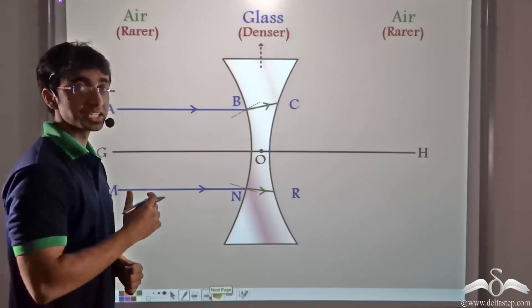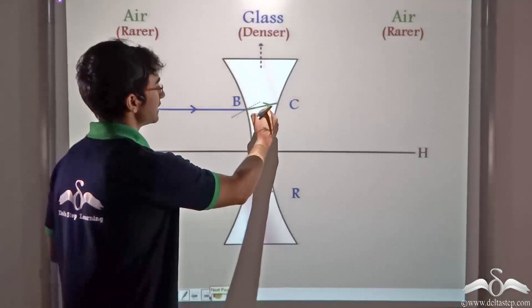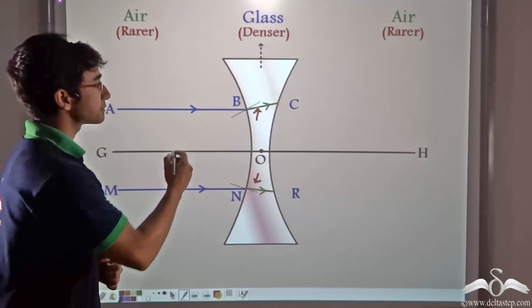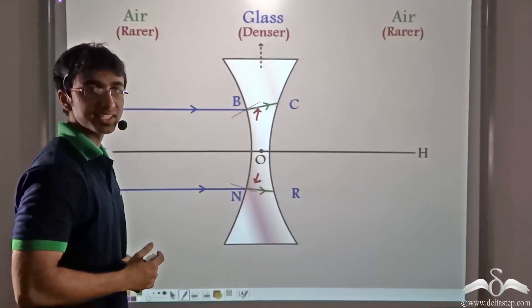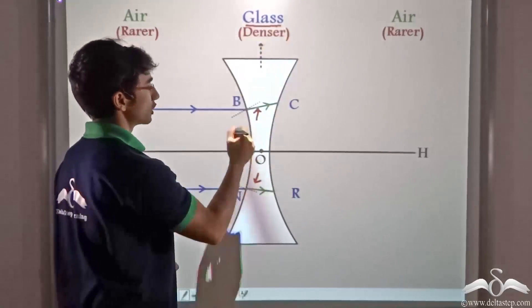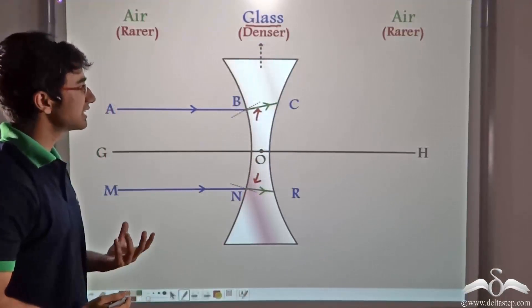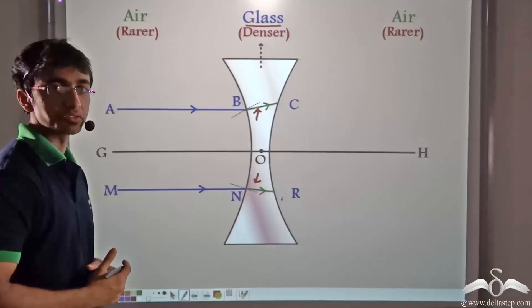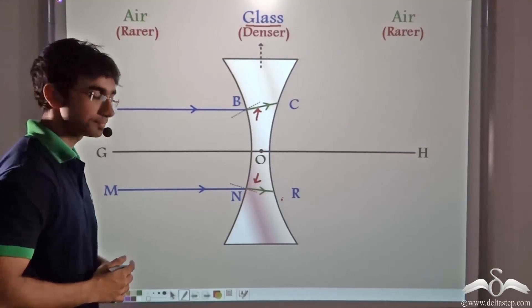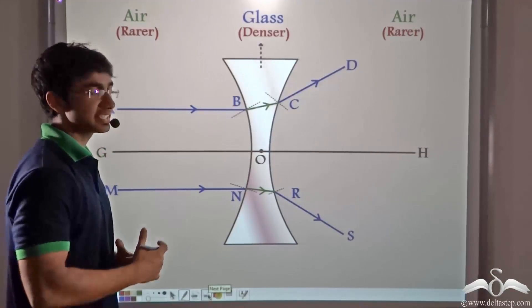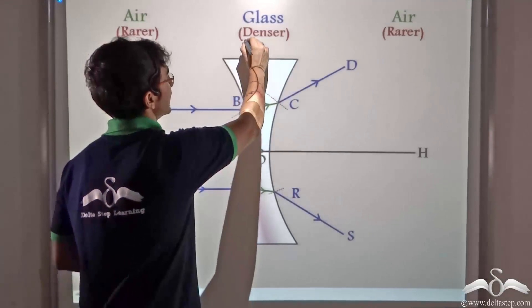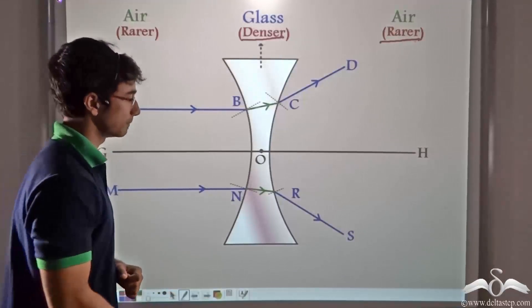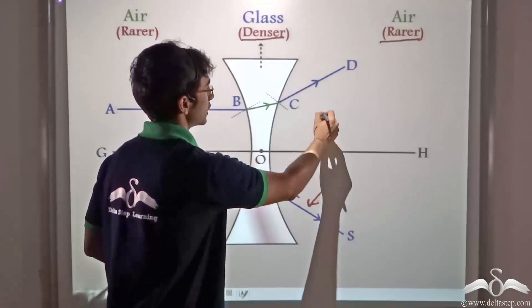Rays AB and MN are refracted at the interface and they bend towards the normal — that is, they move closer to the normal. Now rays BC and NR are refracted rays that travel inside the glass or concave lens. These rays are then incident on the second surface of the concave lens and they encounter the glass-air interface, so refraction takes place again. Since in this case the rays are incident from a denser medium to a rarer medium, after refraction the rays move away from the normal.